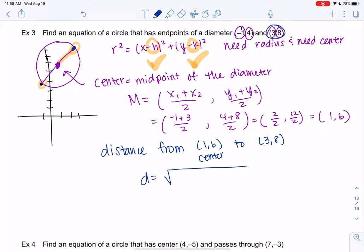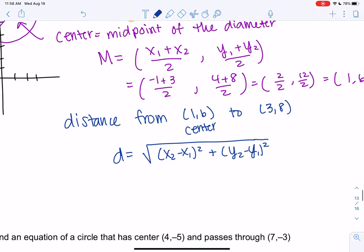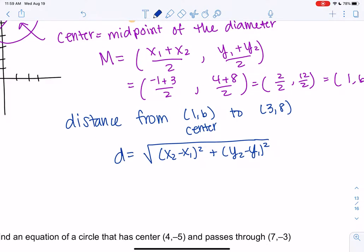Just no reason. You'll get the same answer either way. So distance is the square root of x2 minus x1 squared. I'll write down the formula quick. We'll plug in. So we'll say x2 is 3 and x1 is 1, so 3 minus 1 squared. y2 is 8, y1 is 6, squared. So what do we get? We get 2 squared plus 2 squared.